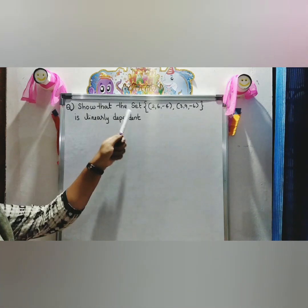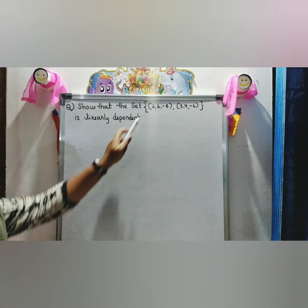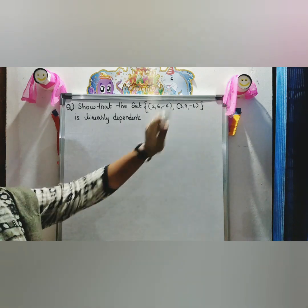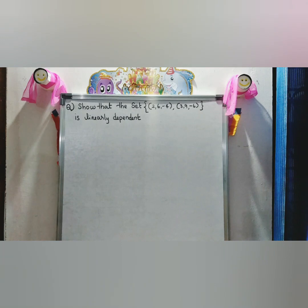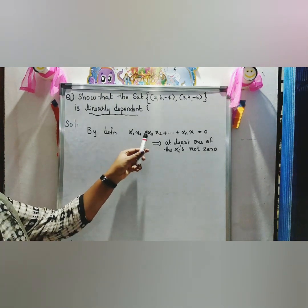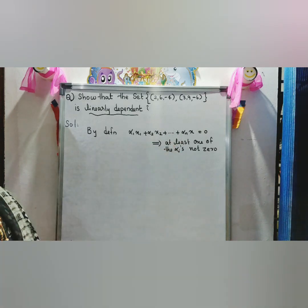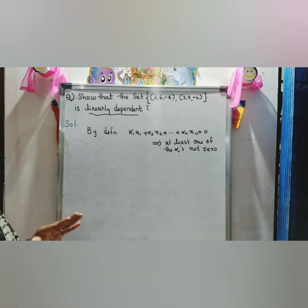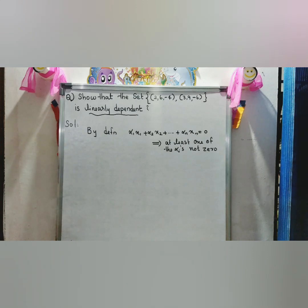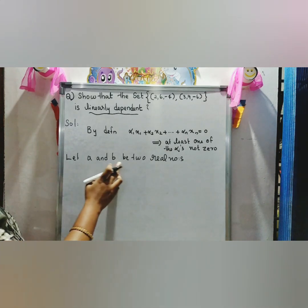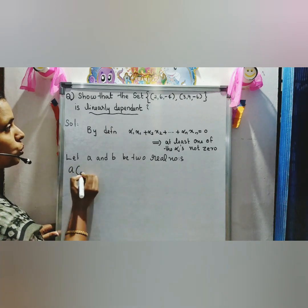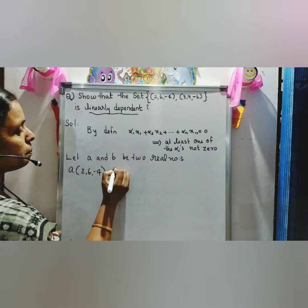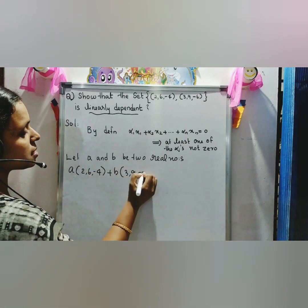Problem: Show that the set {(2,6,-4), (3,9,-6)} is linearly dependent. By definition, we want to show that α₁x₁ + α₂x₂ + ... + αₙxₙ = 0 with at least one αᵢ not equal to zero. Let A and B be two real numbers. We write A·(2,6,-4) + B·(3,9,-6) = 0.